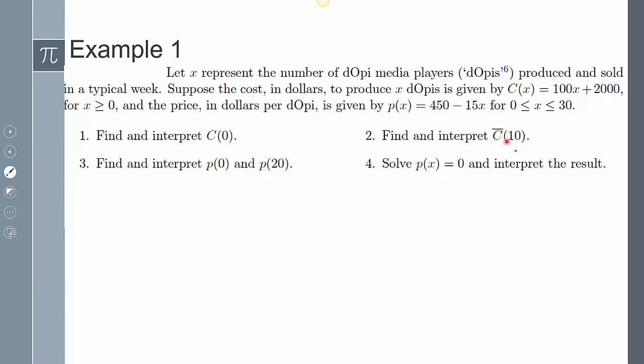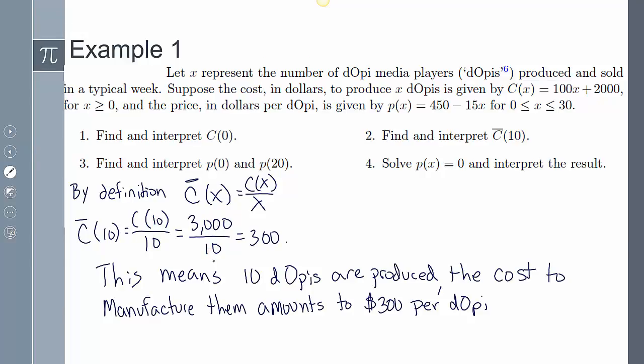Question number two, find and interpret C-bar of 10. So we know by definition C-bar of x is C(x) over x. So that means C-bar of 10 is going to be C(10) over 10. And so if I do C(10), that's 3000. 3000 over 10 is 300. So to interpret that means that the 10 DOPs that are being produced, the cost to manufacture them is going to be $300 per DOP.